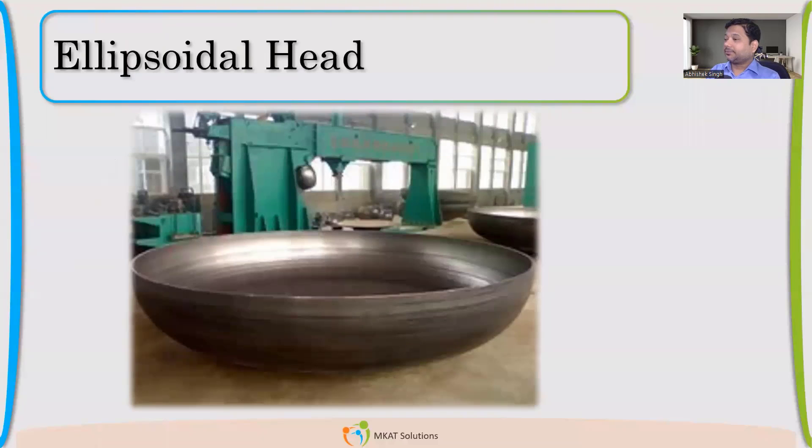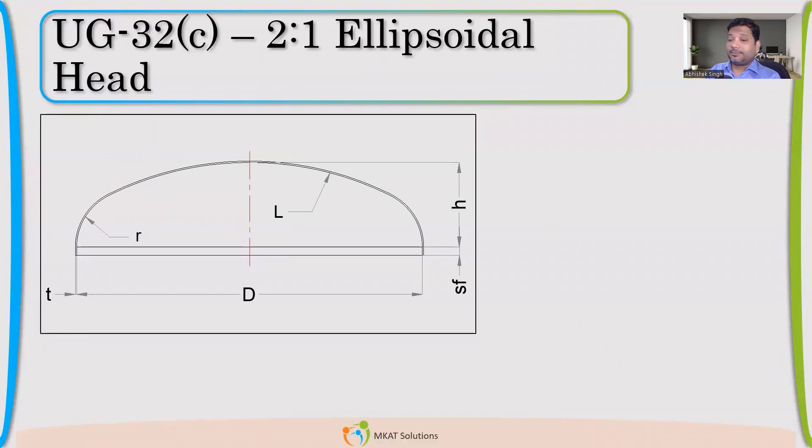This is a typical 2:1 elliptical head. Now when you talk about elliptical head, what is an ellipse? What is the definition of ellipse? You are defining 2:1, but I can have an ellipse with any ratio, right? Apart from 2:1, this ratio can be anything. So this will have two different extreme radii: one will be major axis and the second will be minor.